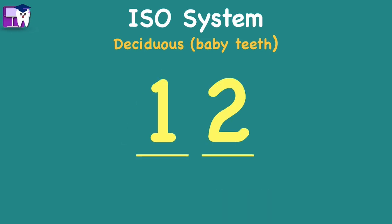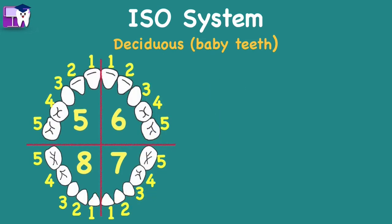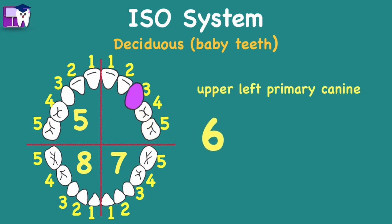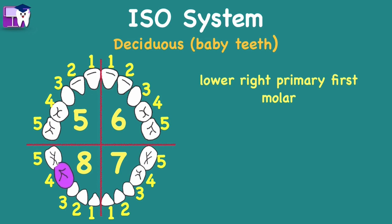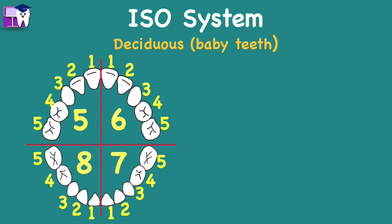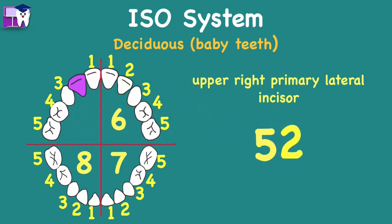Remember that the first digit is about the quadrant and the second digit is about the tooth. For example: upper left primary canine — pronounce it as 6-3. Lower right primary first molar — pronounce it as 8-4. Upper right primary lateral incisor — pronounce it as 5-2.